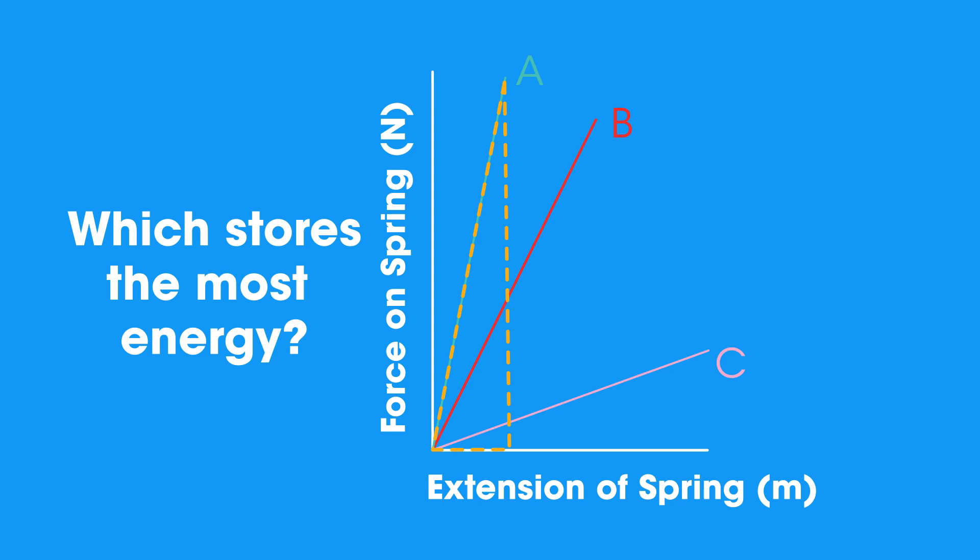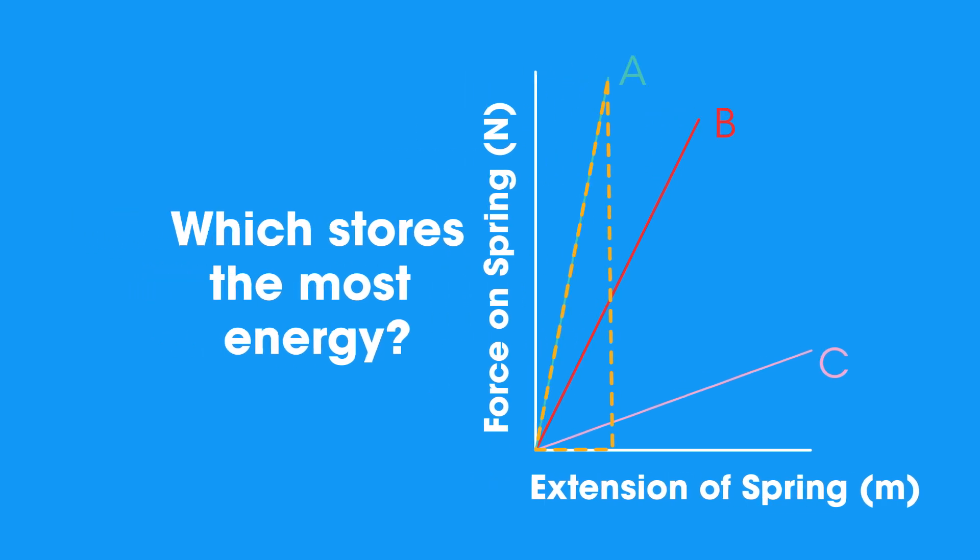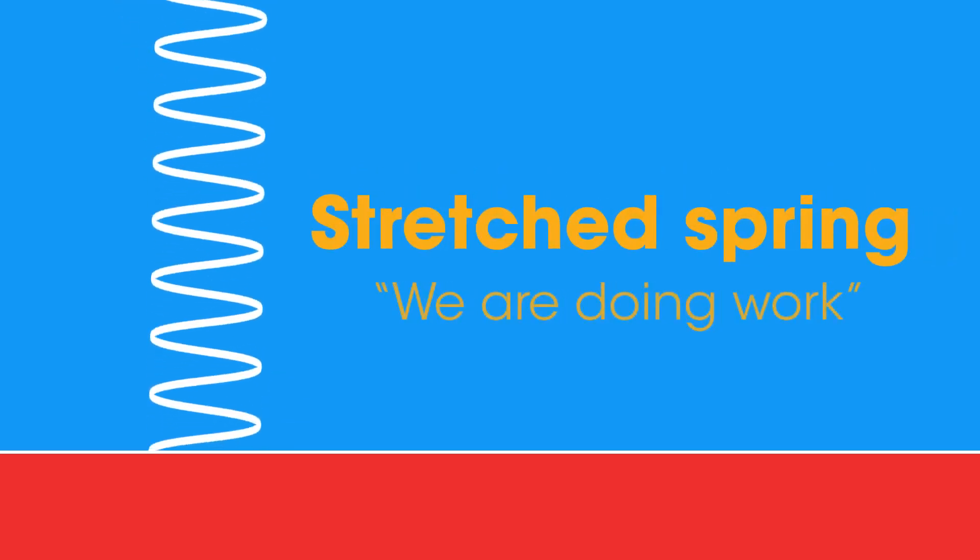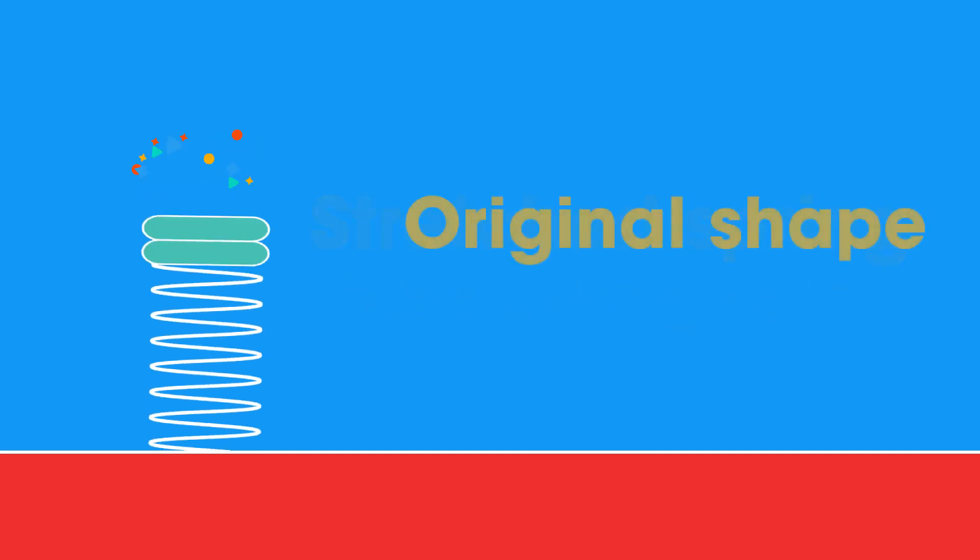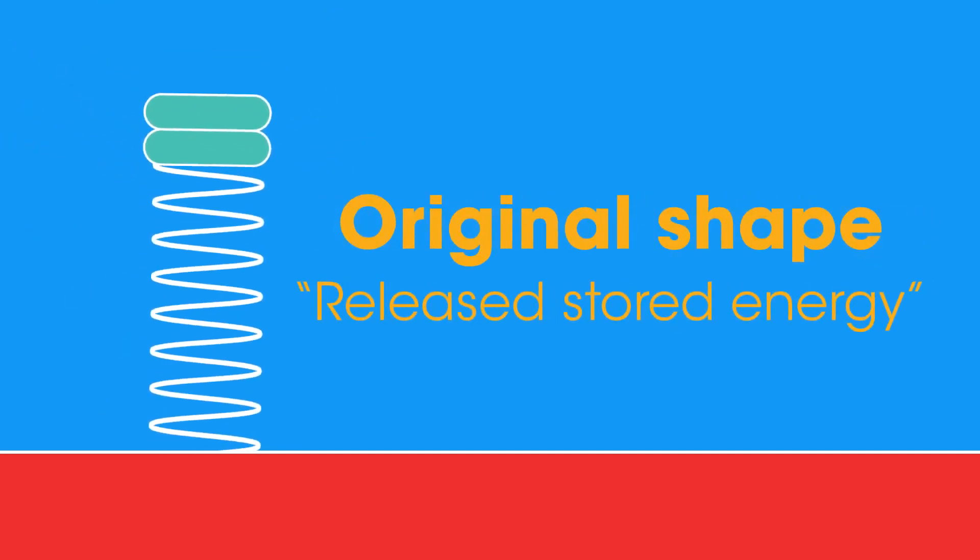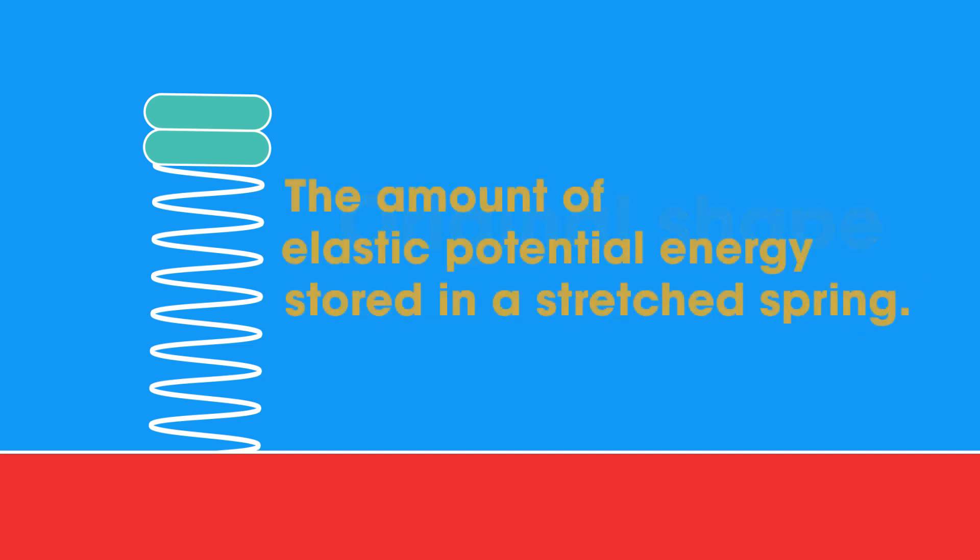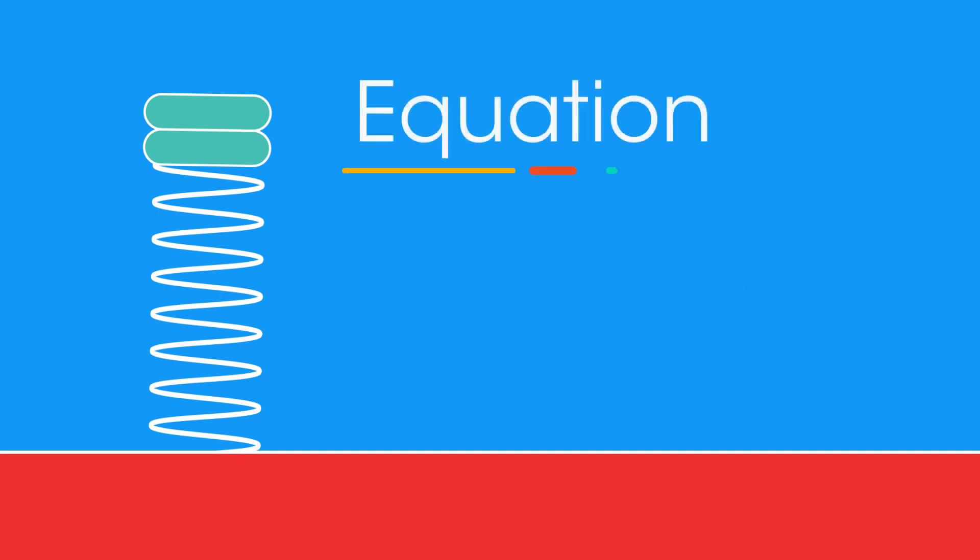Let's look more at the stored energy. When we stretch a spring, we can change its shape. We are doing work. The spring can then go back to its original shape, and the energy stored in it is released.